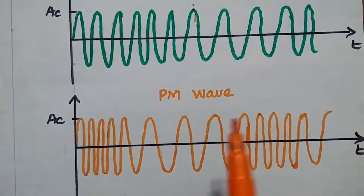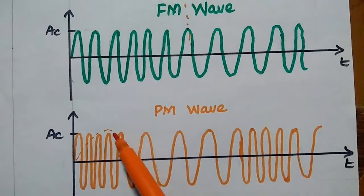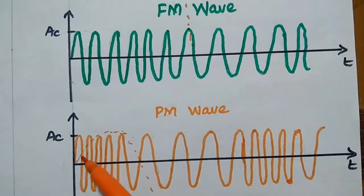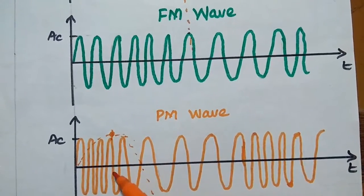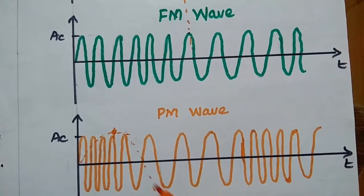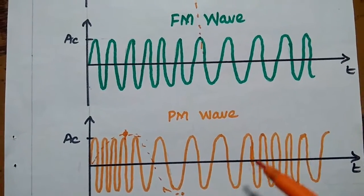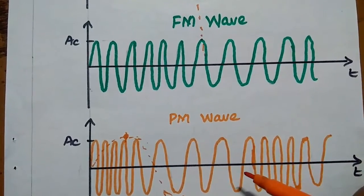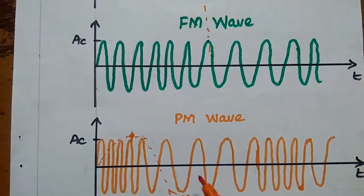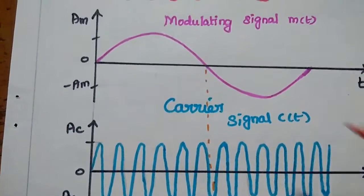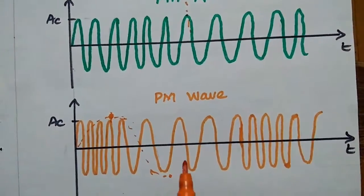In the PM wave, the phase modulated wave, whenever the modulating signal reaches the positive peak, there is a change in the phase. And whenever it reaches the negative peak, there is also a change in phase. So phase modulation occurs at the peak of the amplitude of the modulating signal. This is the PM wave for a sinusoidal signal. If the modulating signal is a sinusoidal signal, then its FM wave and phase modulated wave look as shown.